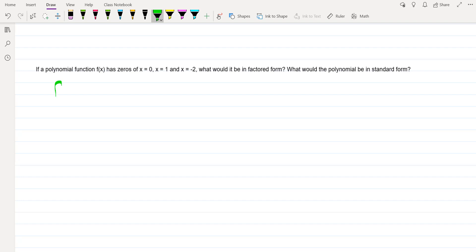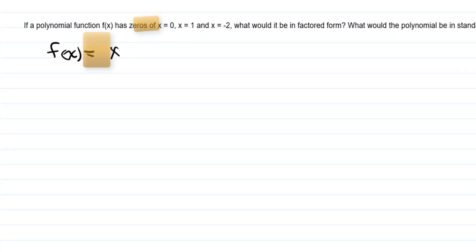So when we write this, the very first thing we're going to do is write our function. They tell us it's f of x, so we're going to use f of x. Now, f of x equals zero, so remember, that's that tricky one. That's just going to be x.